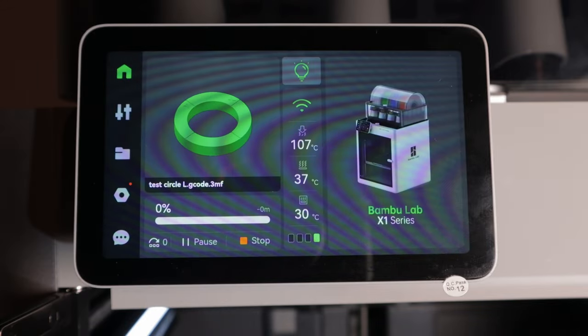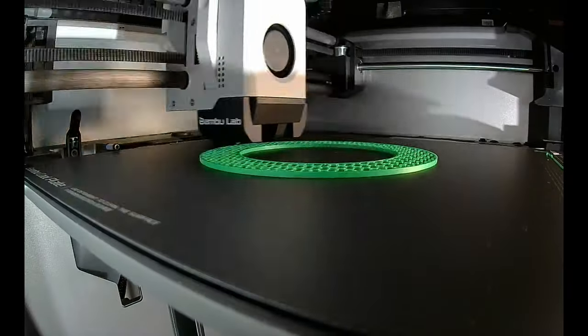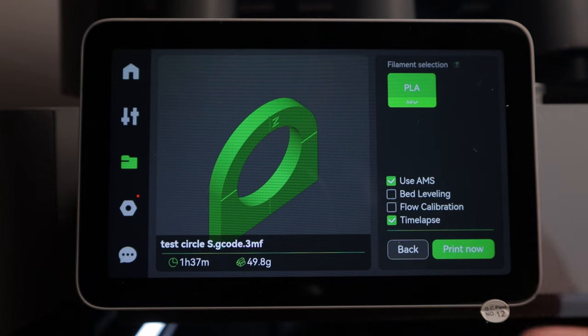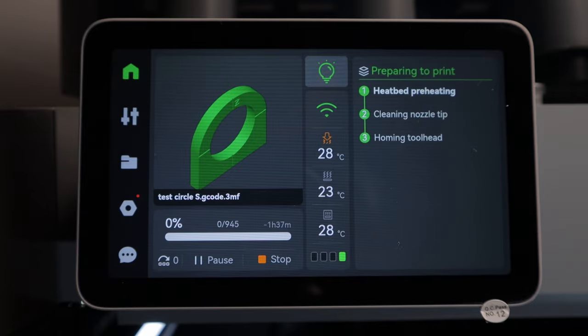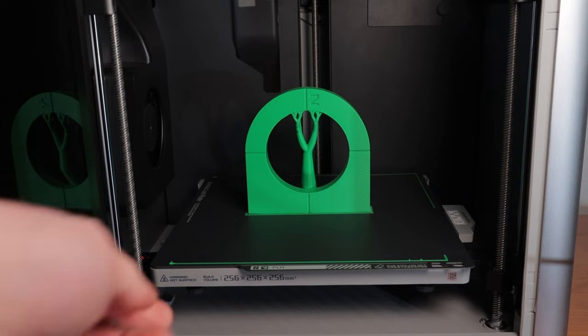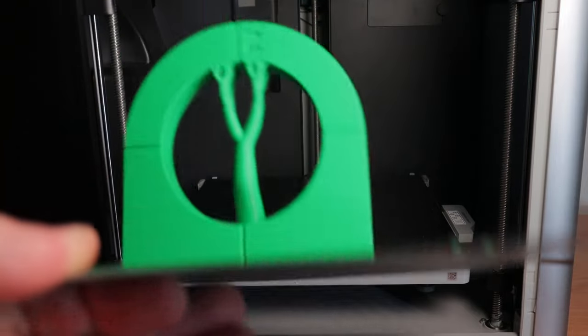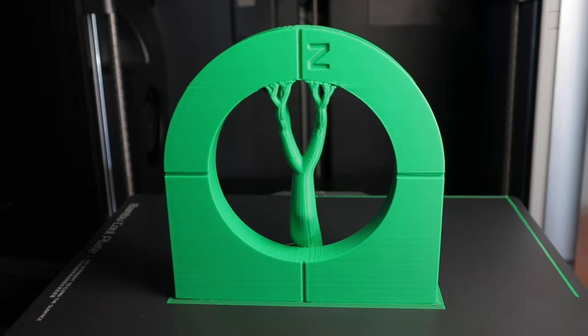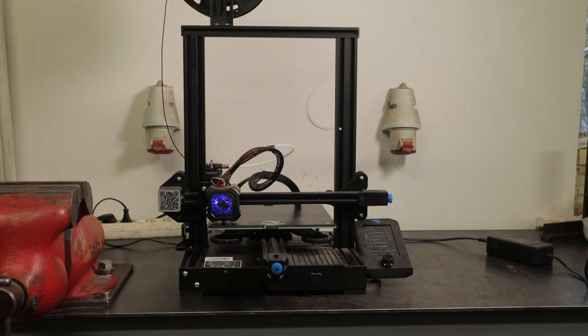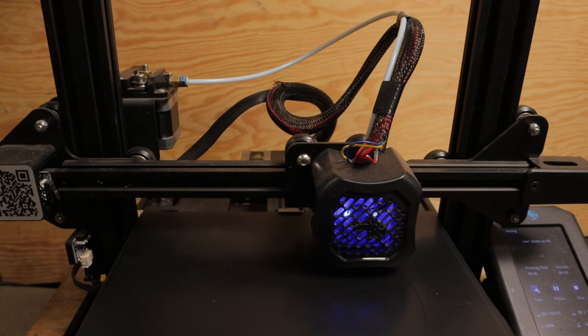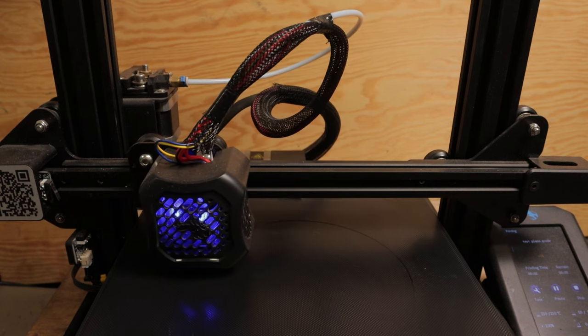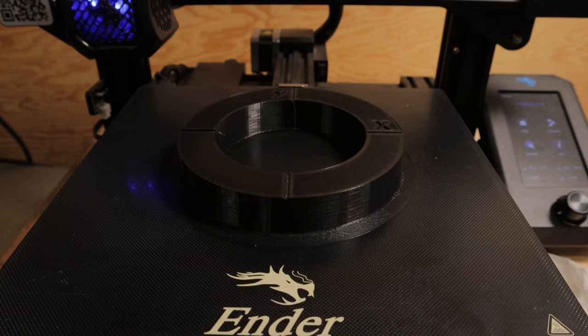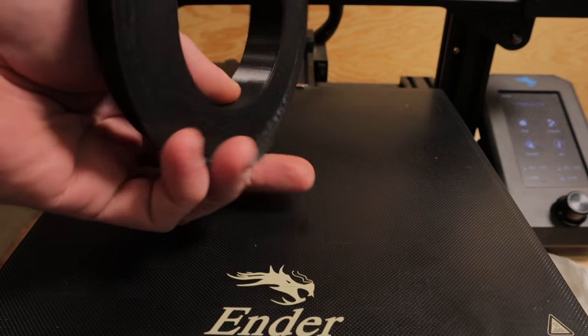And finally time to check the printing precision. I prepared this simple model to check roundness. I did a similar print in the z-axis to see if there's any sagging. And I plan to compare X1C to my old Ender. So I did the same print with a similar setup. Just the printing speed is 55 compared to 200 of X1C. So the print took 4 hours compared to 1 hour with Bamboo Lab.